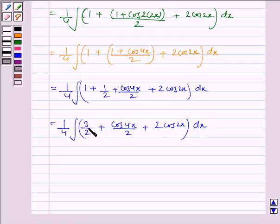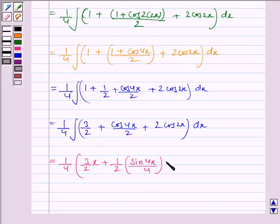The integral of 3/2 with respect to x is 3x/2. So we have 1/4 times (3x/2 plus 1/2 times the integral of cos4x, which is sin4x/4, plus 2 times the integral of cos2x, which is sin2x/2).